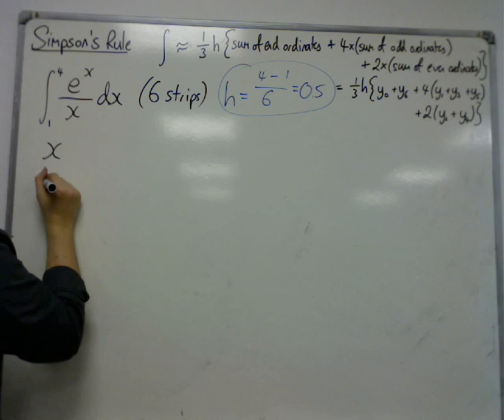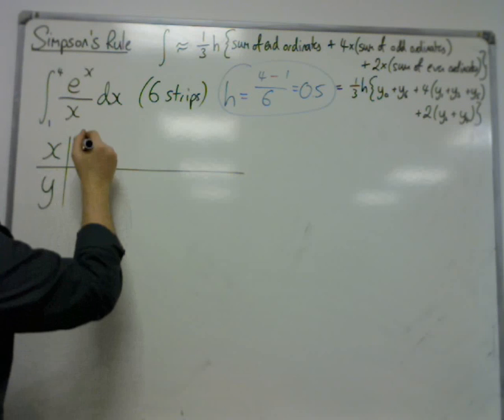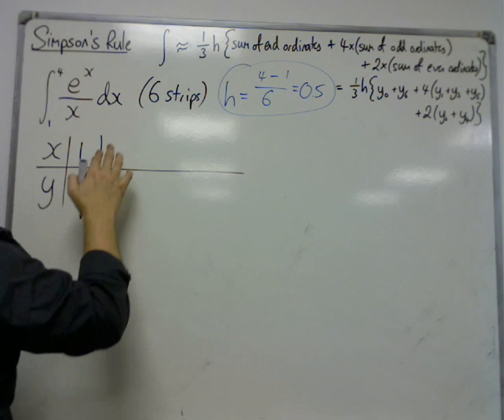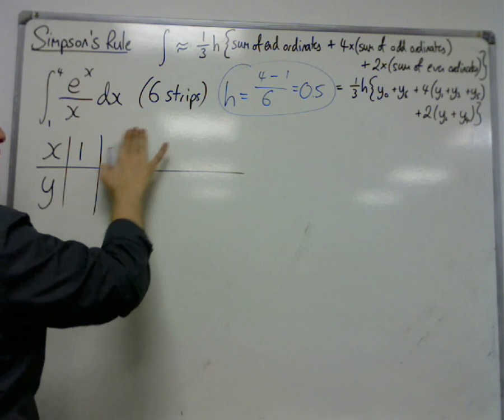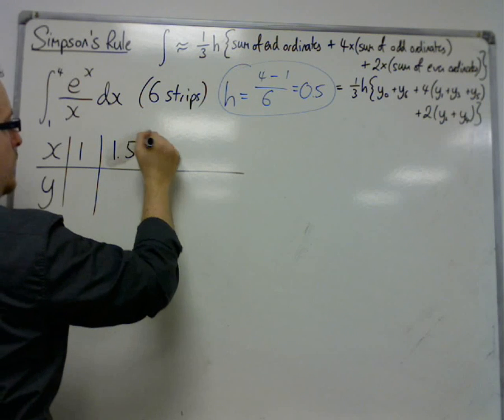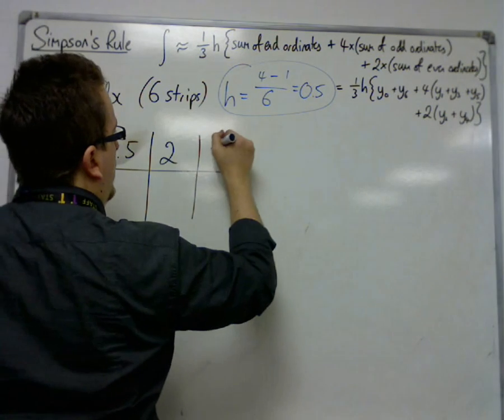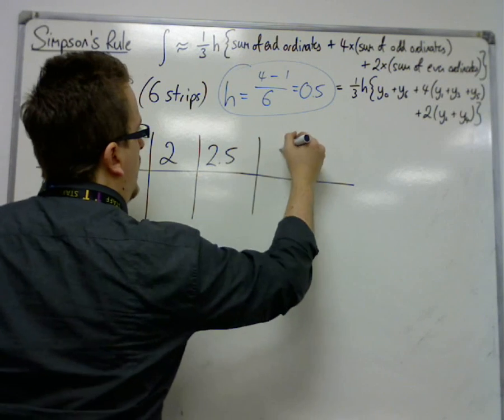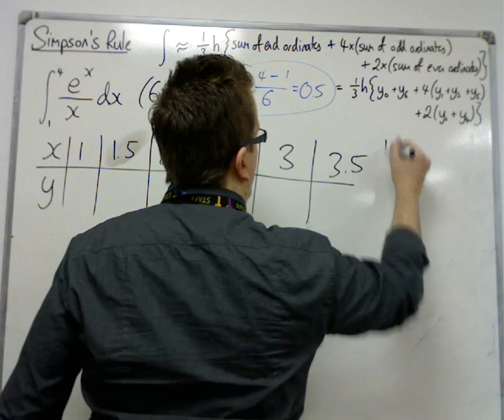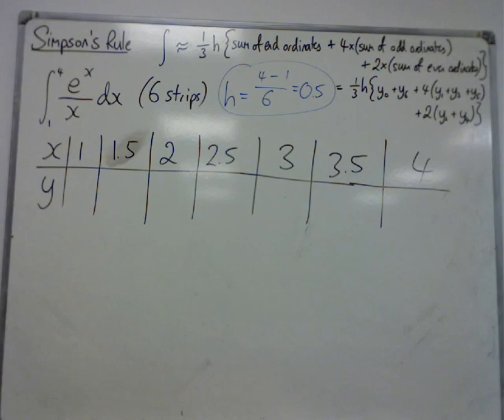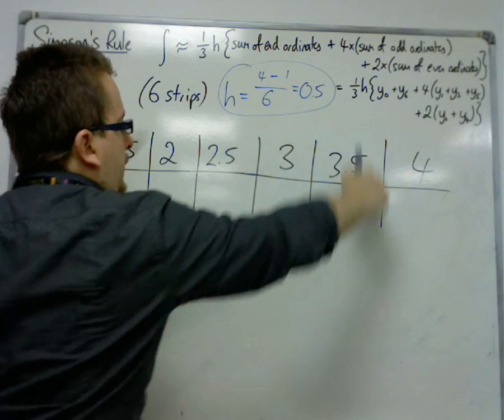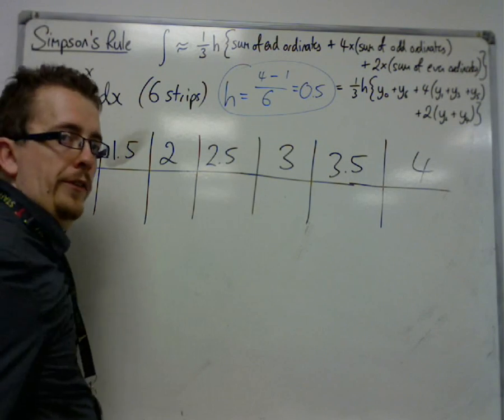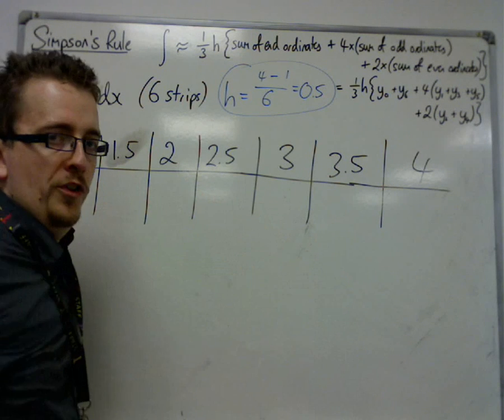So we're going to build ourselves a table of values. We're starting at 1, then we've got 1.5, that's the width of the strip, then 2, then 2.5, then 3, then 3.5, then 4. So when X is 1, that gives us the 1, 2, 3, 4, 5, 6 strips. Seven ordinates. Always have one more ordinate than strips.